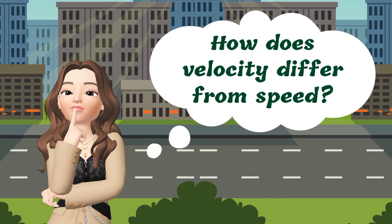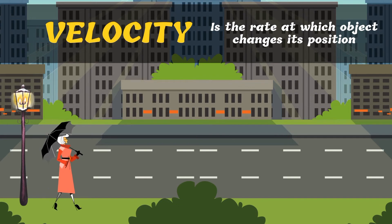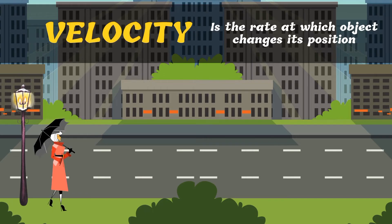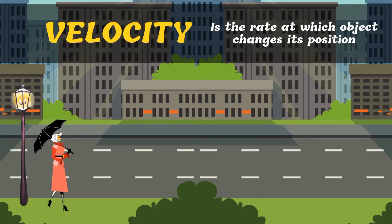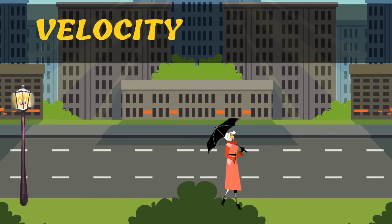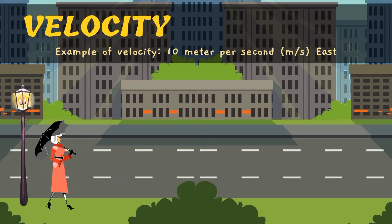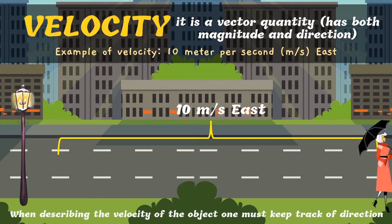How does velocity differ from speed? Speed is defined as how fast an object is moving. Velocity is the rate at which an object changes its position. A person moving one step forward and one step backward is always returning to his original position — this motion does not result in a change in position, which means a zero velocity. If a person in motion wishes to maximize his velocity, that person must make an effort to maximize the amount that he displaces from his original position. Velocity is a vector quantity, meaning it has both magnitude and direction. For example, velocity is 10 meters per second east. When describing the velocity of an object, one must keep track of direction — this is one of the essential differences between speed and velocity.